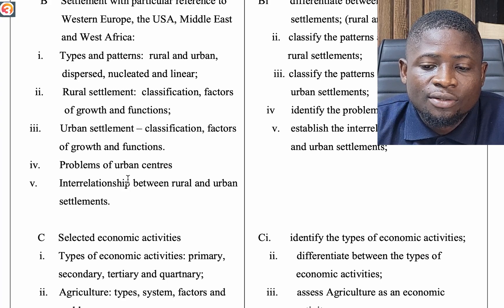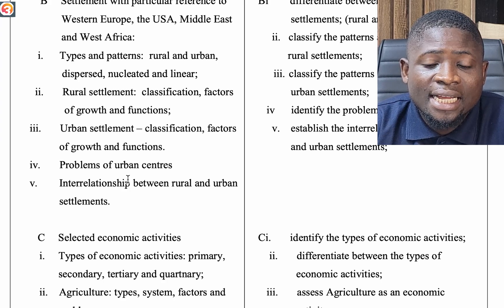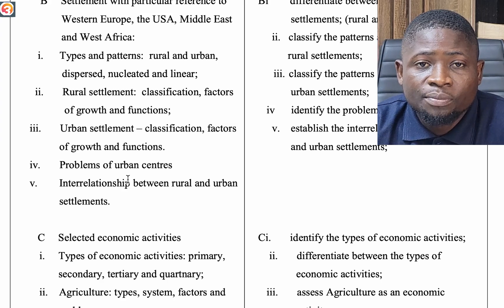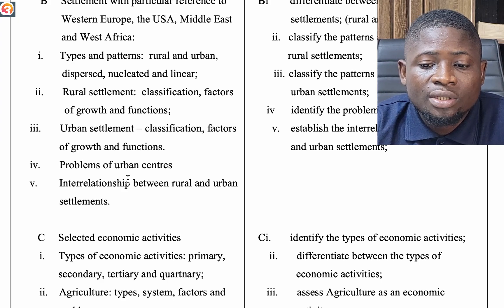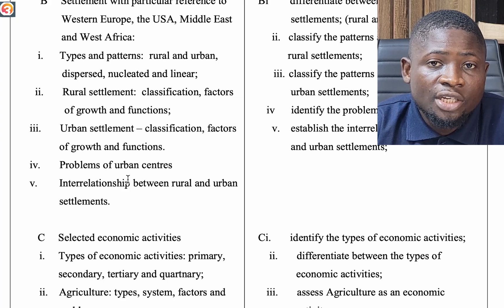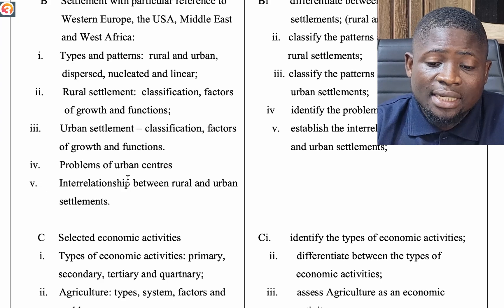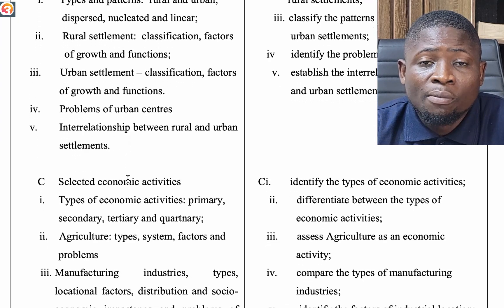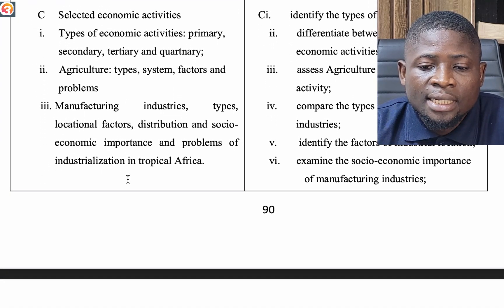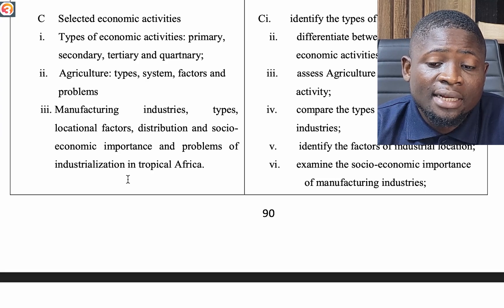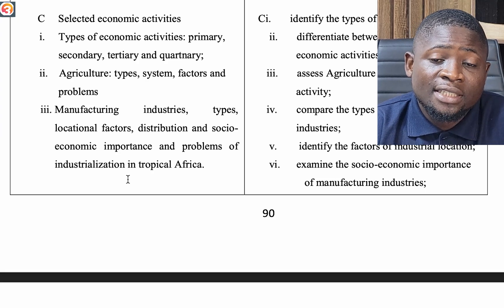Under settlements, we look at types and patterns: rural and urban, dispersed, nucleated, and linear. For rural settlements, we cover classification, factors of growth, and functions. For urban settlements, we cover classification, factors of growth, functions, problems of urban centers, and the interrelationship between rural and urban settlements.